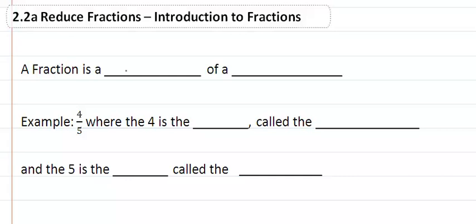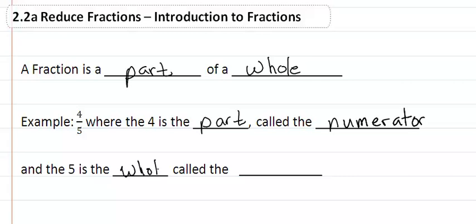A fraction is a part of a whole. For example, if we have four-fifths, where four is the part called the numerator and five is the whole called the denominator.